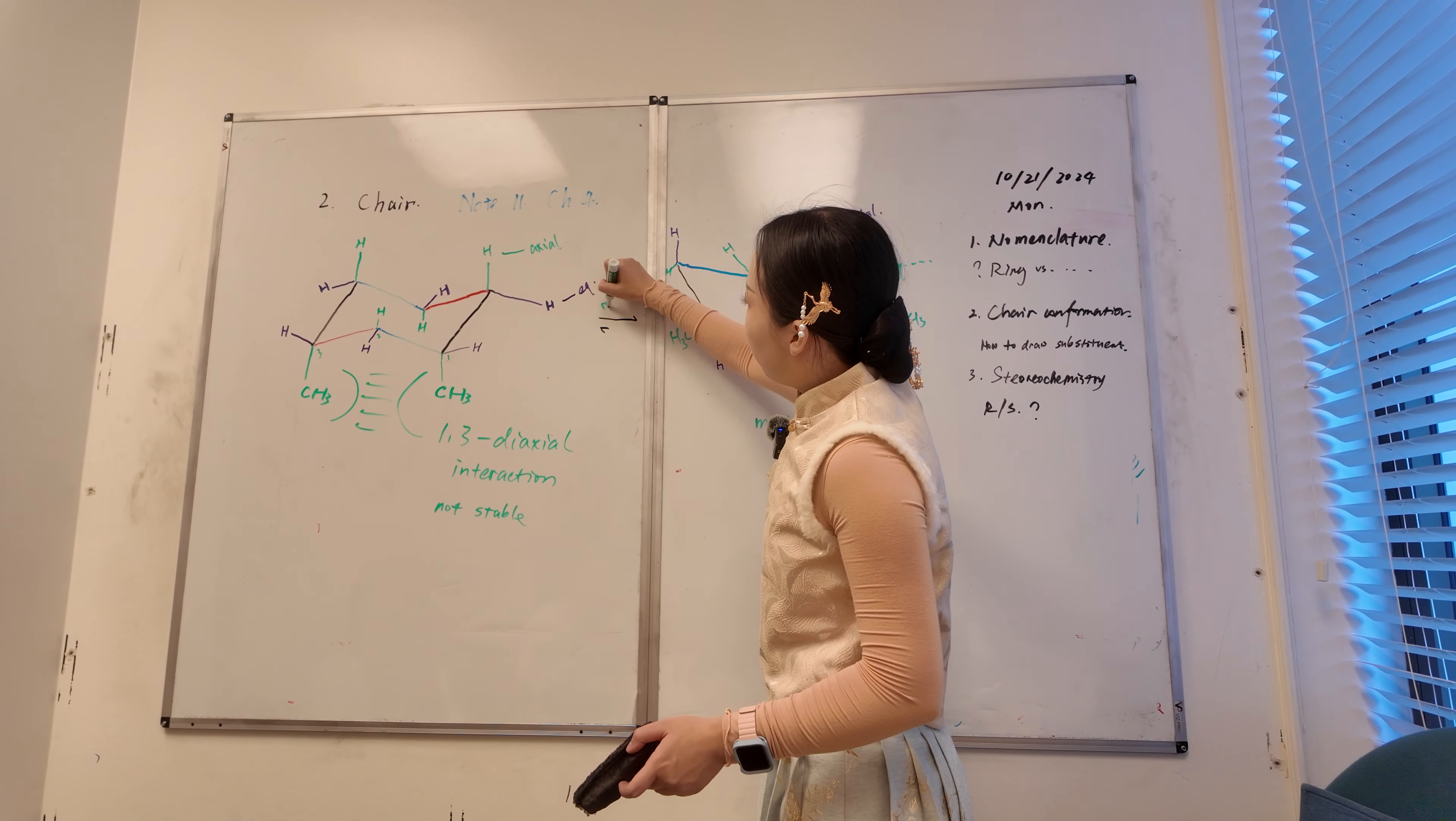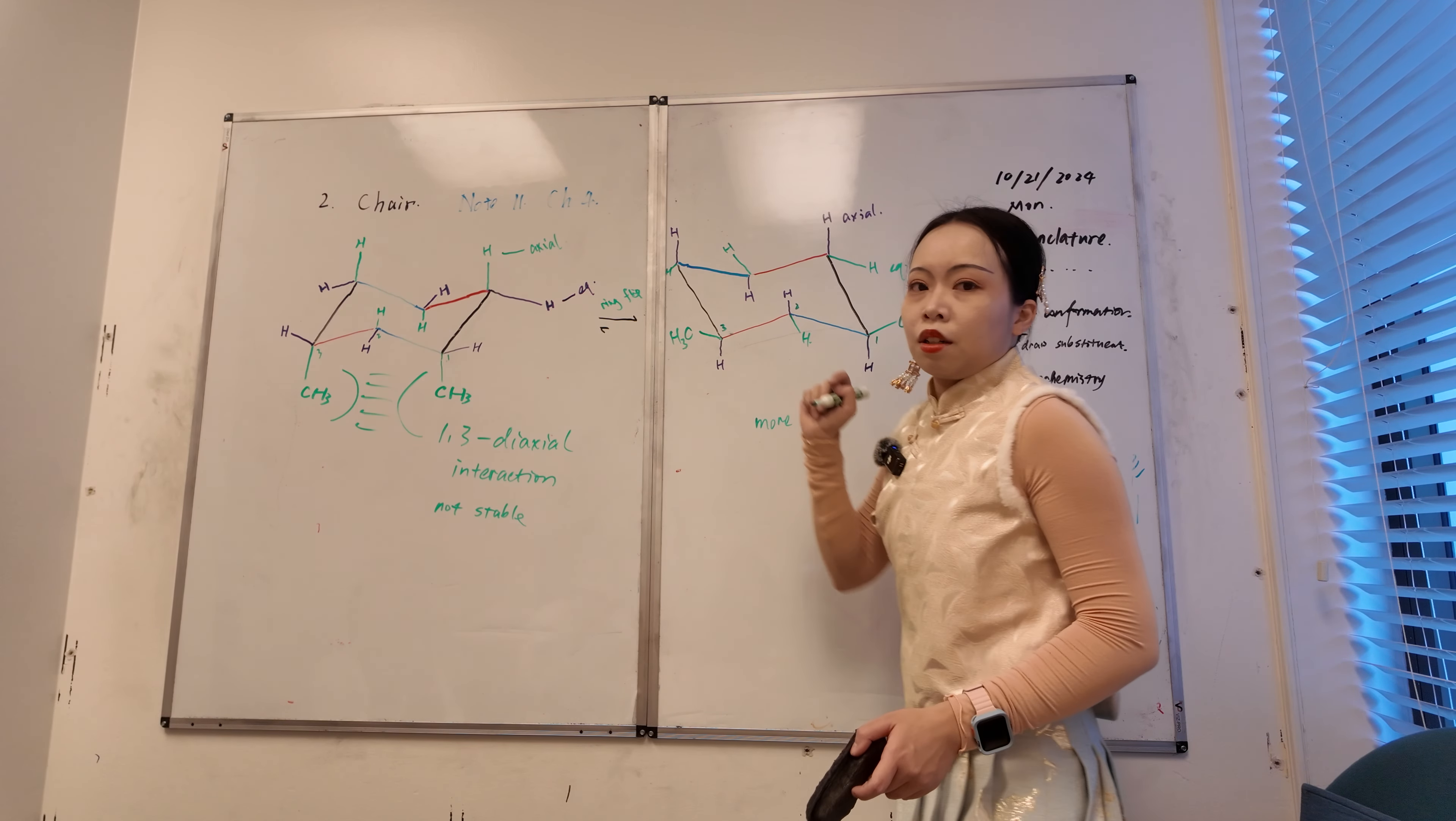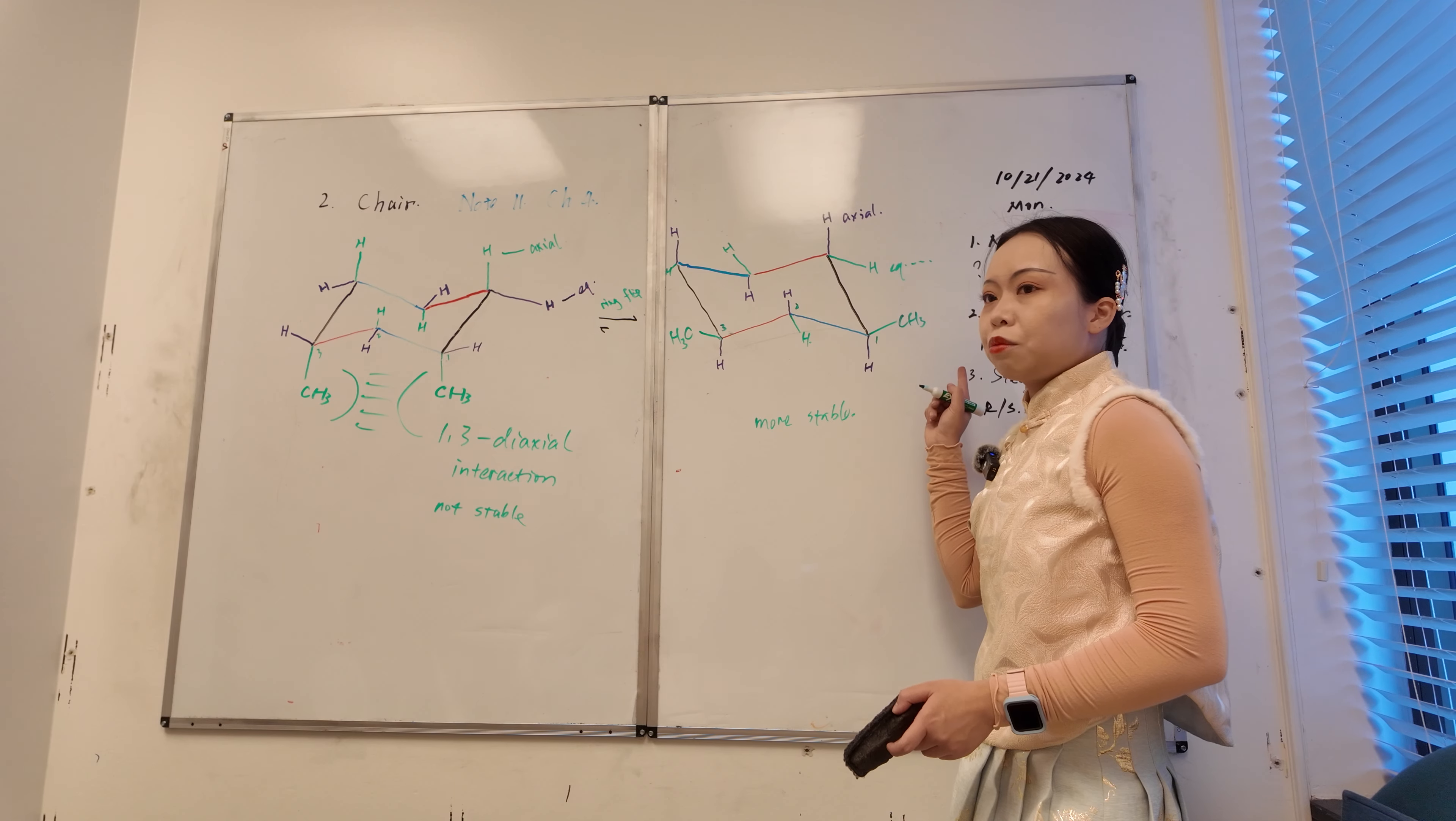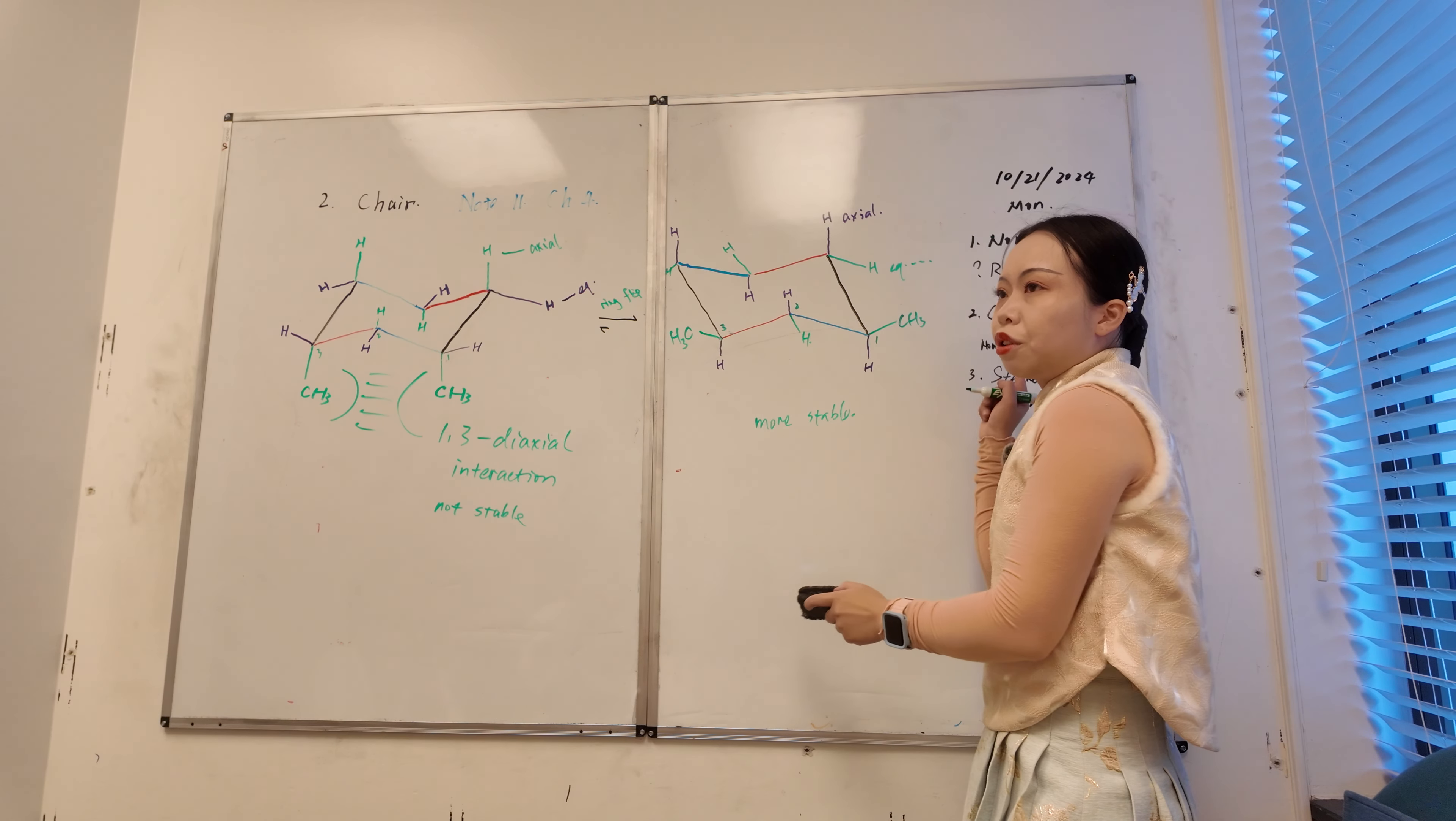That's why, when I draw the ring flip. This one is longer. Because it's favored, the second conformer. Are we cool with what we're talking about? So you should always keep the bulky group on the equatorial as possible.